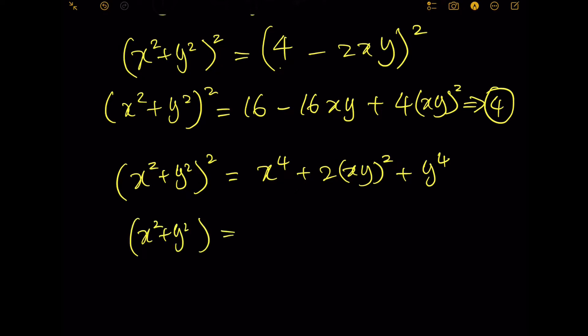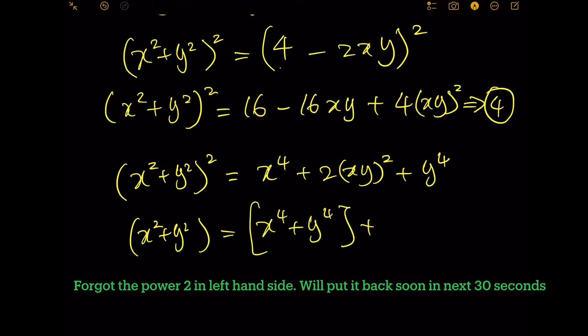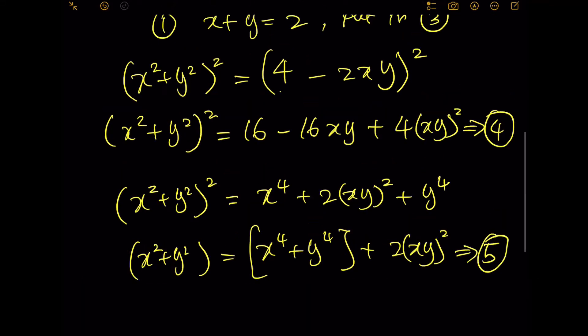You have x^4 + y^4 + 2(xy)^2. Let's call this equation 5. If you look at equation 2...